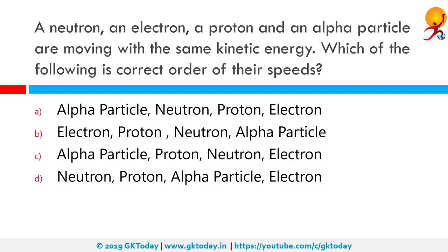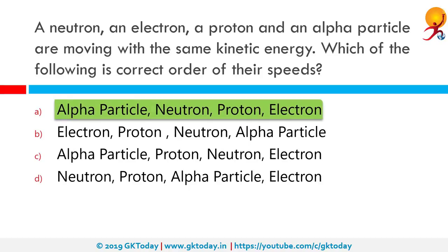A neutron, electron, proton and alpha particle are moving with the same kinetic energy. Which is the correct order of speed? The alpha particle is fastest, followed by neutron, then proton, then electron. Option A is the correct answer.